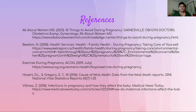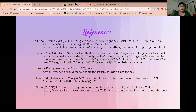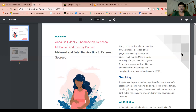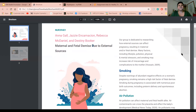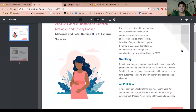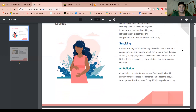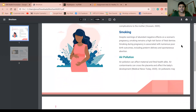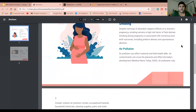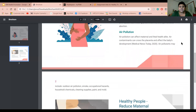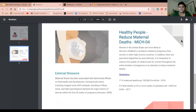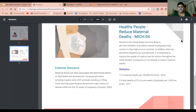These are our references. We also have our brochure here, which consolidates all of our information. We have smoking, as Anna talked about, and what it can do during pregnancy. We also have a section on air pollution, which not a lot of people talk about, some statistics, and other external stressors.